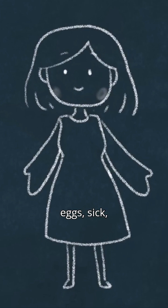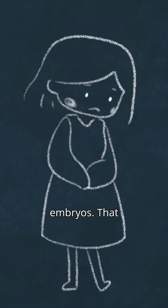Along with any unfertilized eggs, sick, dying, or dead embryos. That protective process is known as menstruation, leading to the period.